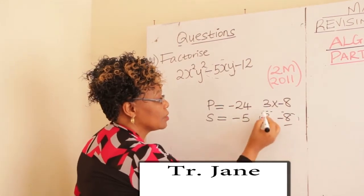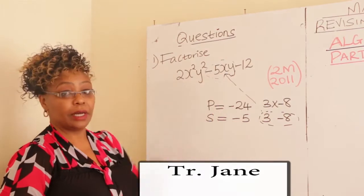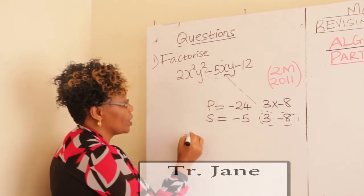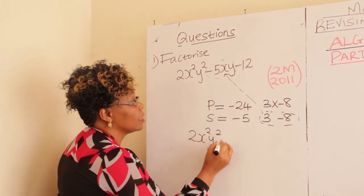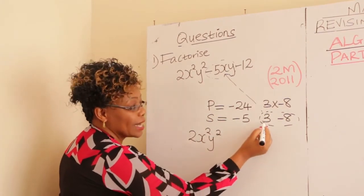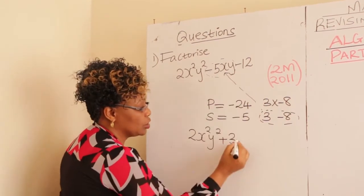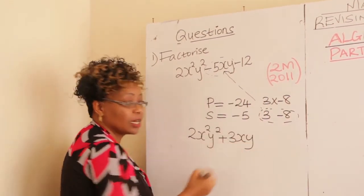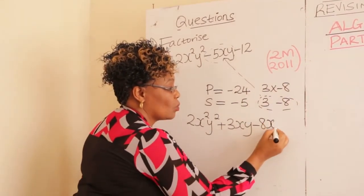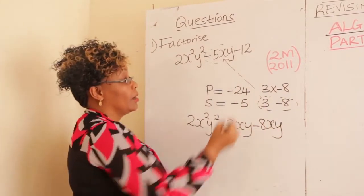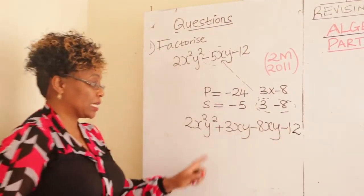Pick these numbers and substitute them in the middle term. You write: 2x squared y squared, plus 3xy, minus 8xy, minus 12.